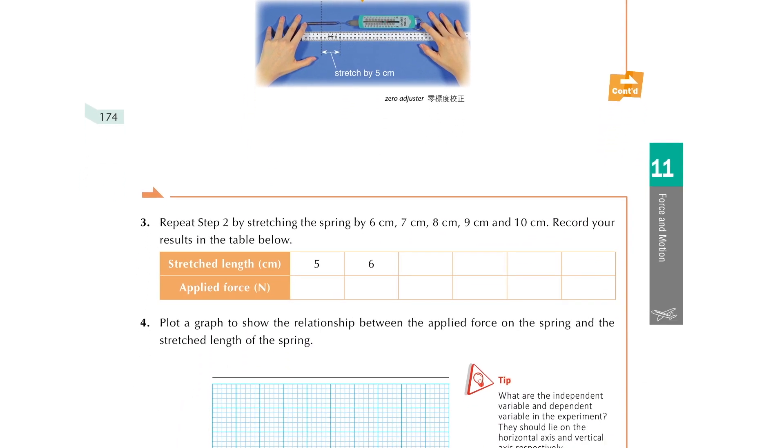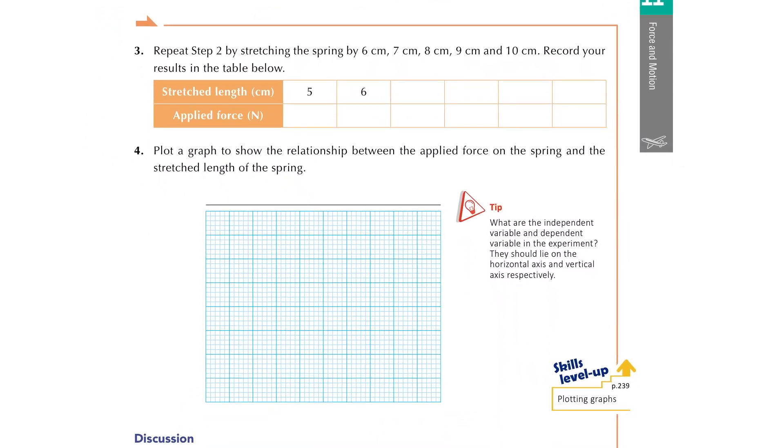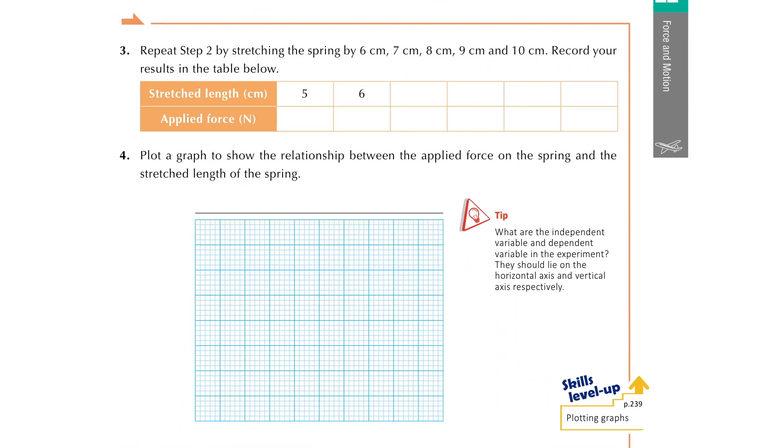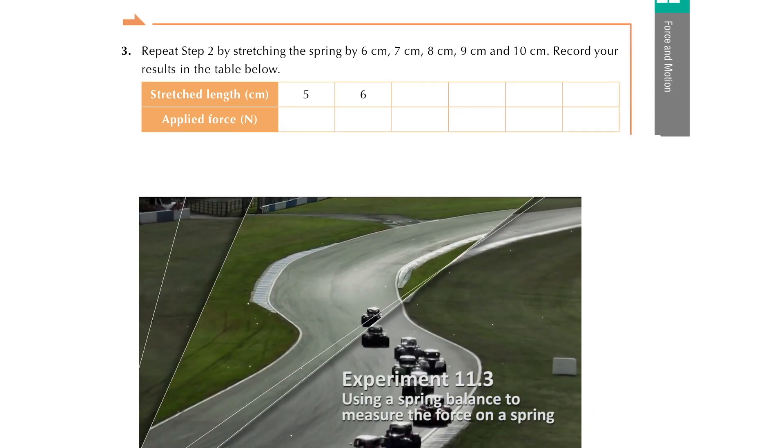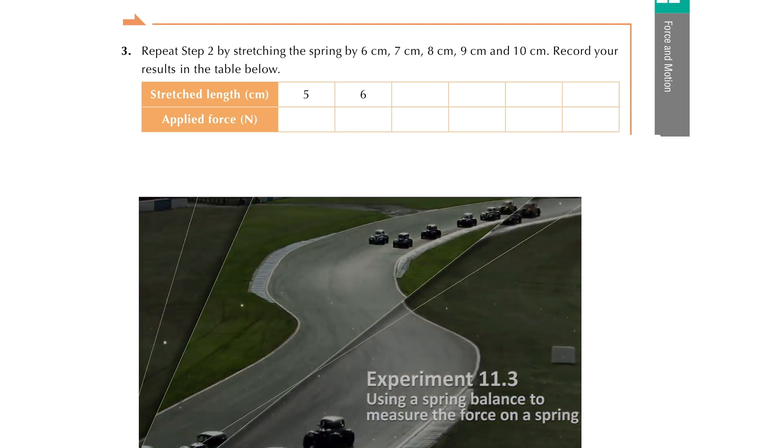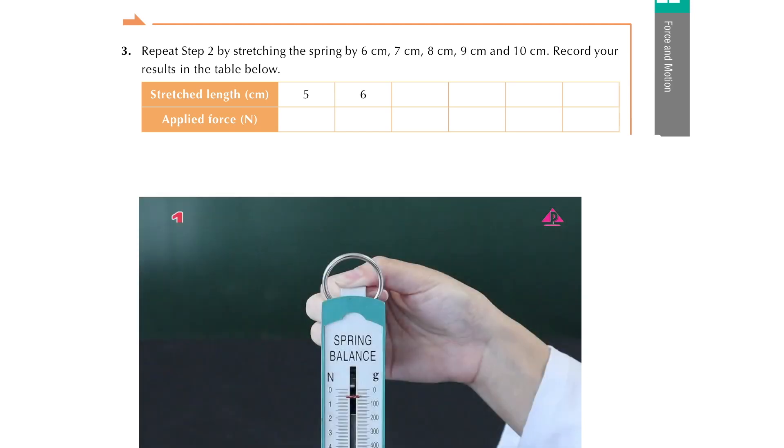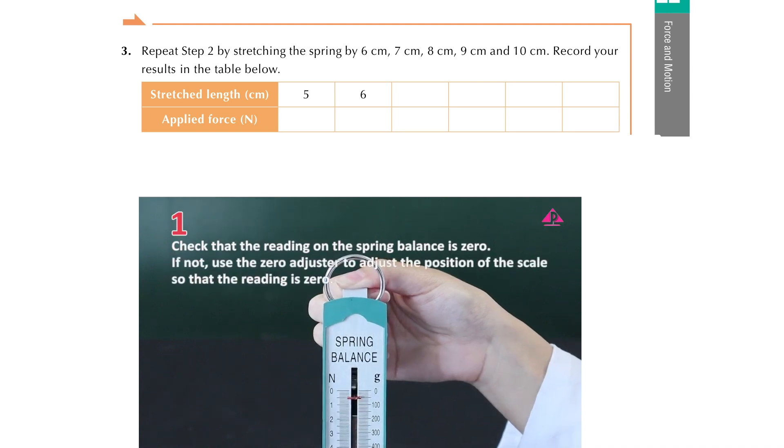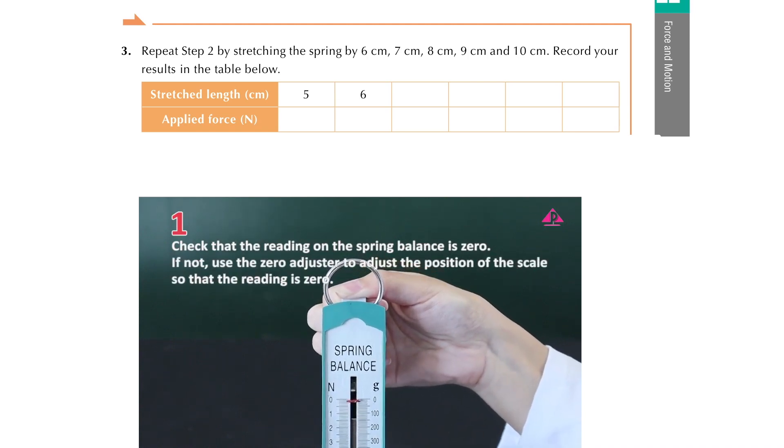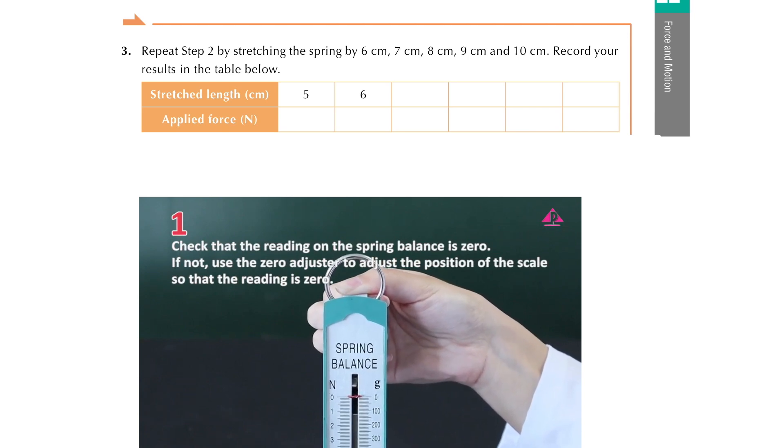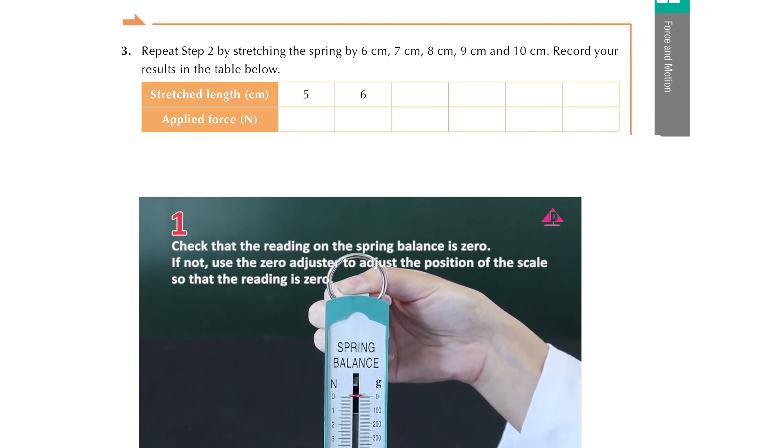That means to set the scale to zero when there is nothing hung onto the spring. Check that the reading on the spring balance is zero. If not, use the zero adjuster to adjust the position of the scale so that the reading is zero.